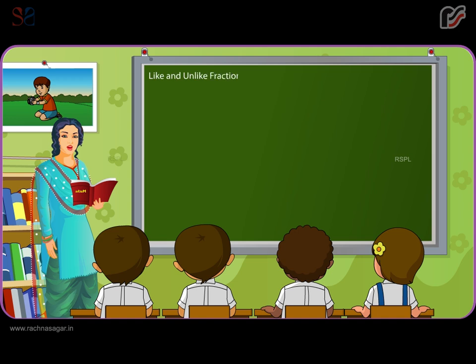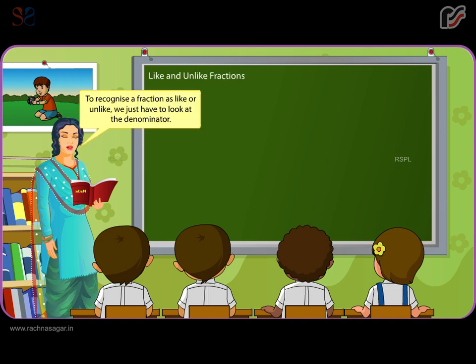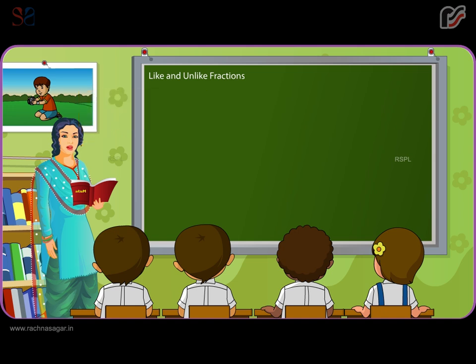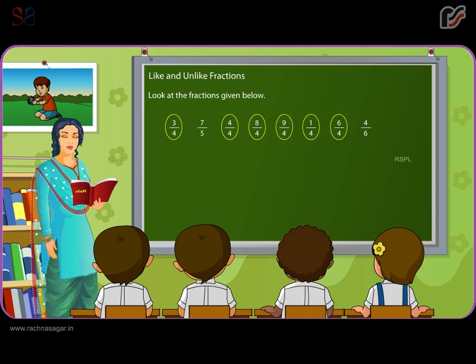Like and unlike fractions. To recognize a fraction as like or unlike, we just have to look at the denominator. Like fractions have the same denominators and unlike fractions have different denominators. Look at the fractions given below. In the given example, like fractions are 3 by 4, 4 by 4, 8 by 4, 9 by 4, 1 by 4 and 6 by 4.